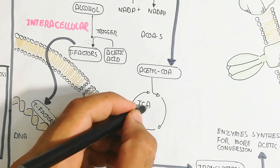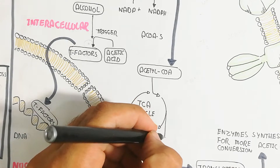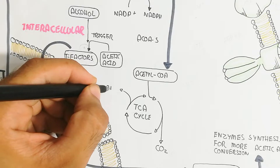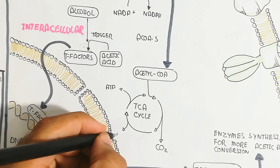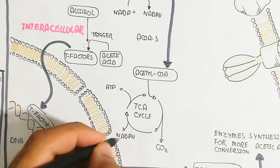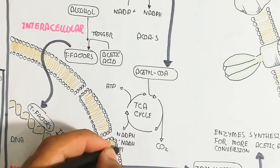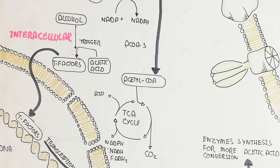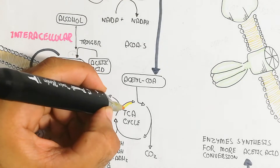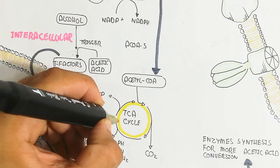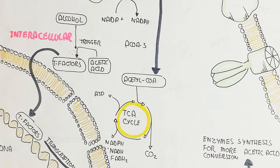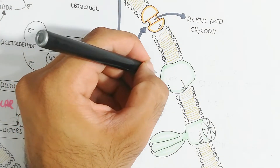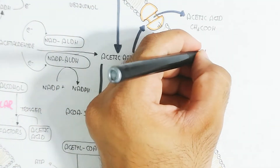The TCA cycle produces ATP, NADPH, NADH, and FADH₂. These are high-energy proton donors that feed the electron transport chain. In acetobacter, ubiquinone oxidase enzyme is used rather than the full electron transport chain, and protons are pumped outward through this enzyme.